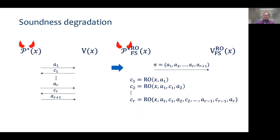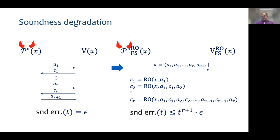The problem is the degradation of soundness resulting from the Fiat-Shamir transform. Let us assume that the interactive protocol has soundness error epsilon for a cheating prover running in time t — meaning that any such cheating prover can fool a verifier with probability at most epsilon. Then, if the interactive protocol has r rounds and the hash function is a random oracle, the best guarantee we can prove generically for the non-interactive counterpart is that its soundness error is at most t^(r+1) times epsilon. This is a terrible soundness degradation, as the two examples next will illustrate.